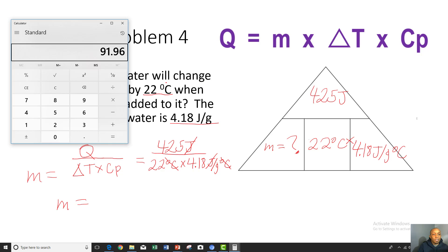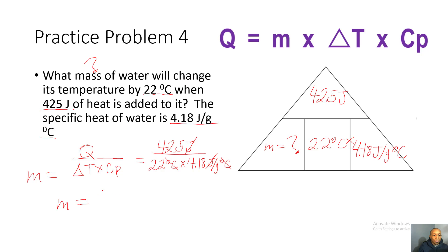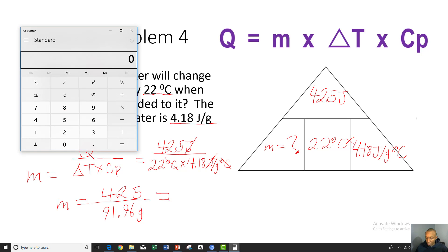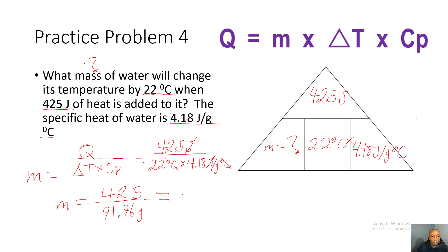First, calculate 22 times 4.18 equals 91.96. Then 425 divided by 91.96 gives us 4.62 grams. So our mass is 4.62 grams.